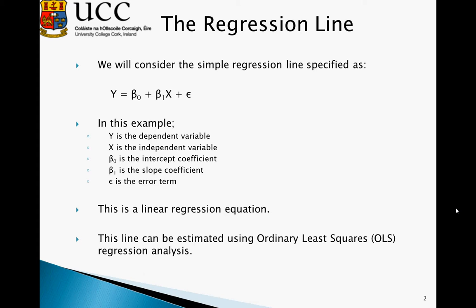Beta 1, our slope coefficient, tells us the effect of a one unit change in X on Y. When we observe the sign of this slope coefficient, the plus sign in front of beta 1 tells us there is a positive relationship. If this sign is negative, it indicates a negative relationship exists between X and Y.